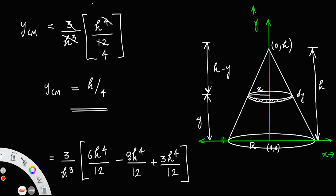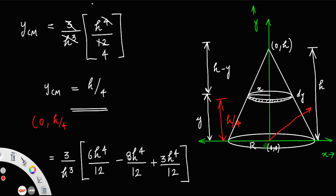The y coordinate of the center of mass is at a distance of h/4 from the base. Since the solid cone is also symmetric about the z axis, the z coordinate is also 0. So the coordinates of the center of mass are (0, h/4, 0). Thank you.